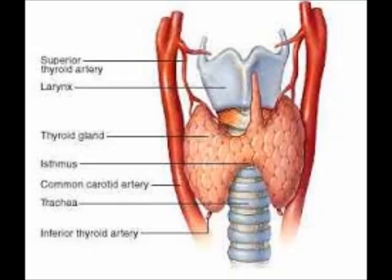This thyroid gland gives hormones which are essential for life maintenance. The gland is supplied with the superior thyroid artery and inferior thyroid artery, and it also has a nerve supply. It is attached with the trachea.